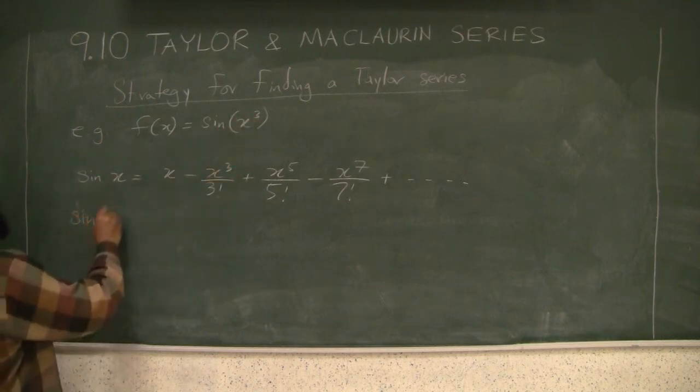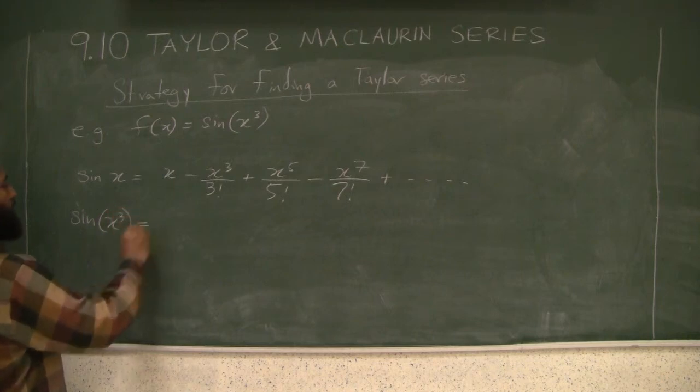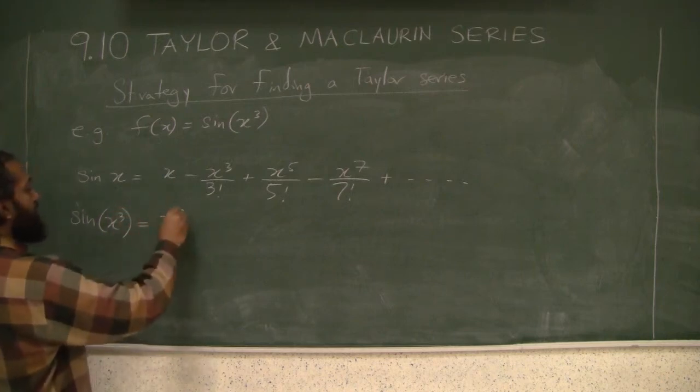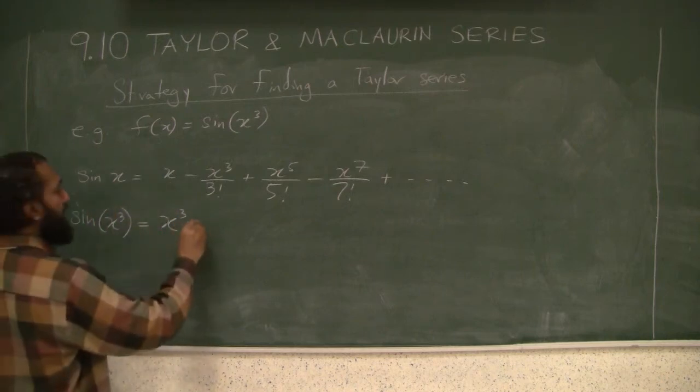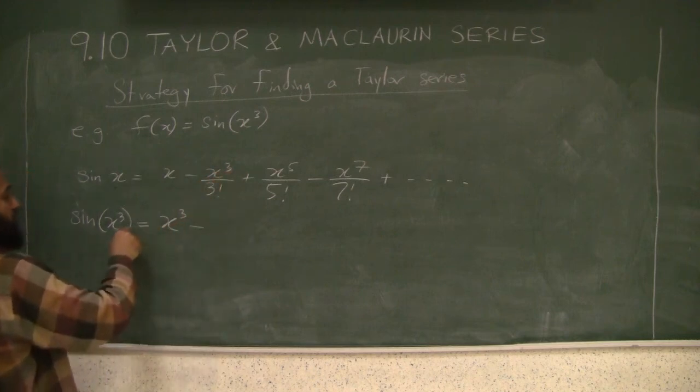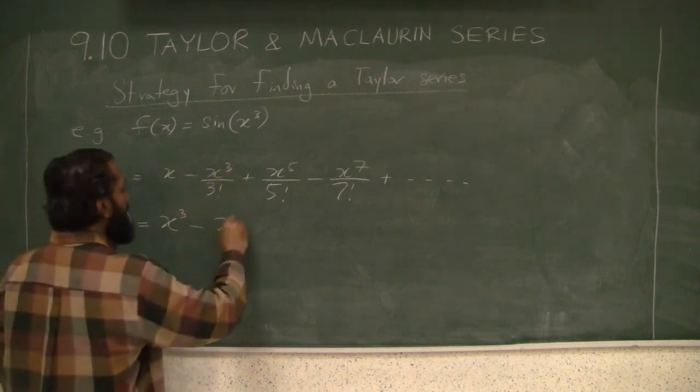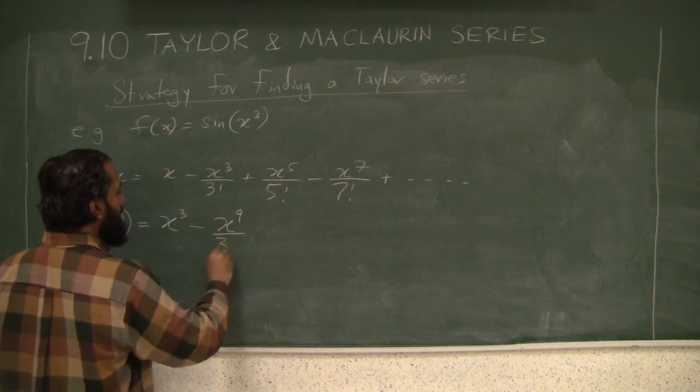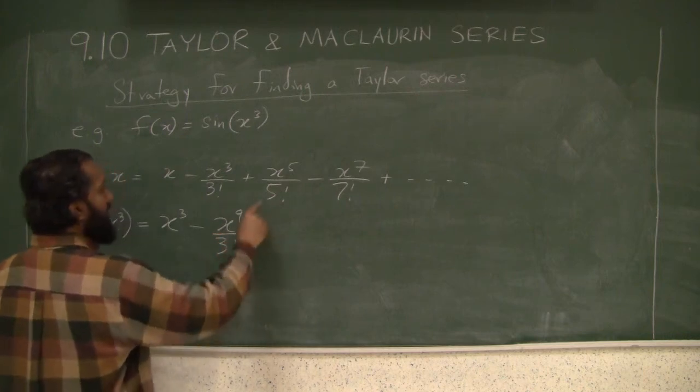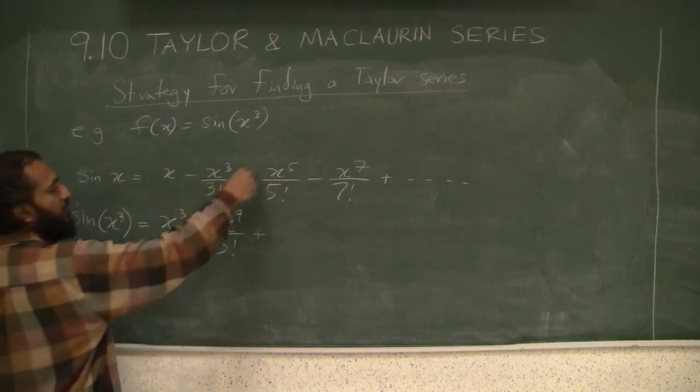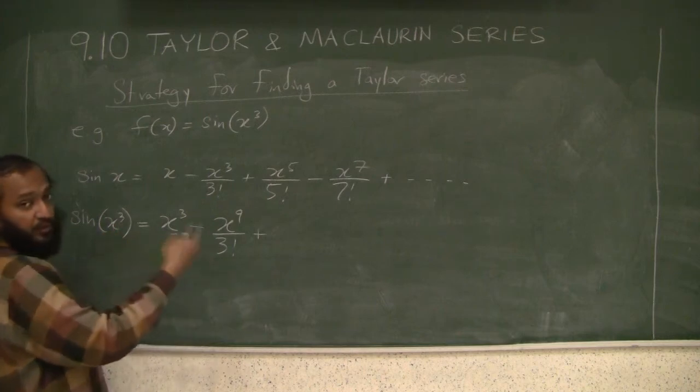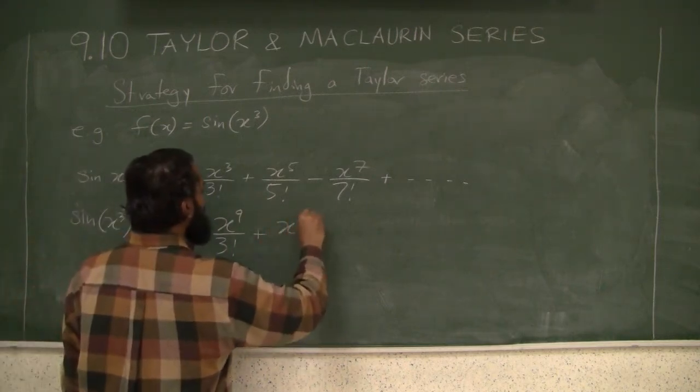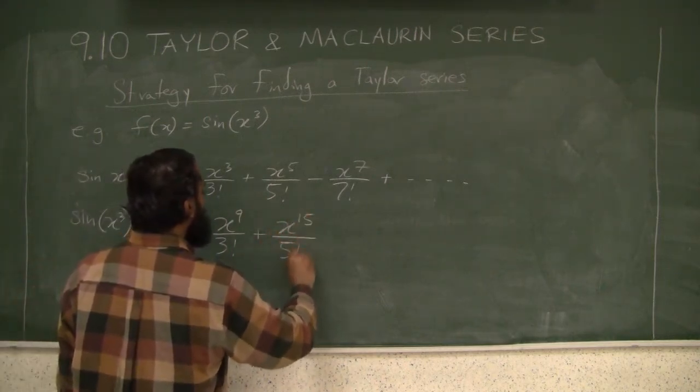So what we can do is say sin(x³) would be x³ - (x³)³/3! + (x³)⁵/5! = x³ - x⁹/3! + x¹⁵/5! - x²¹/7!.